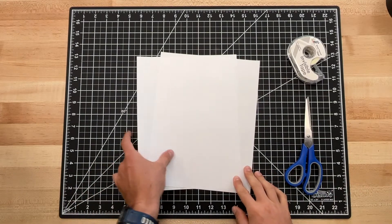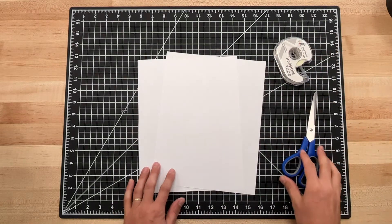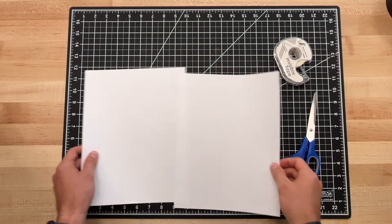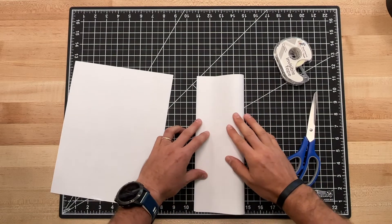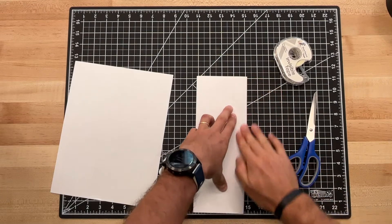Alright, for this last step in level one, we're going to need two sheets of paper, some tape, and a pair of scissors. We're going to start by marking the center line on these pieces of paper because we want to cut along that center mark.